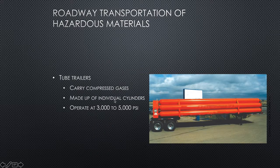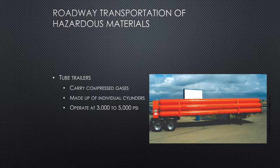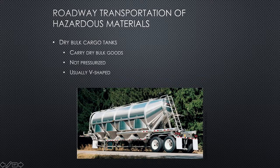Tube trailers carry compressed gases behind a semi-truck, made up of individual cylinders, and operate at 3,000 to 5,000 PSI — so you have an explosion potential. One trailer can carry several different gases in each tube. The valve control box is usually found at the rear of the trailer, and you'll need somebody who is specially certified and trained to operate it.